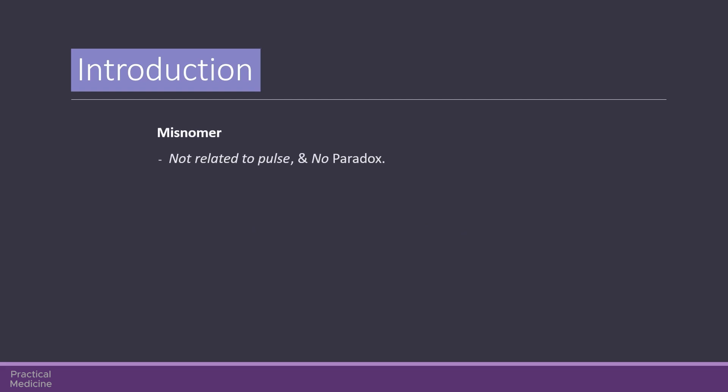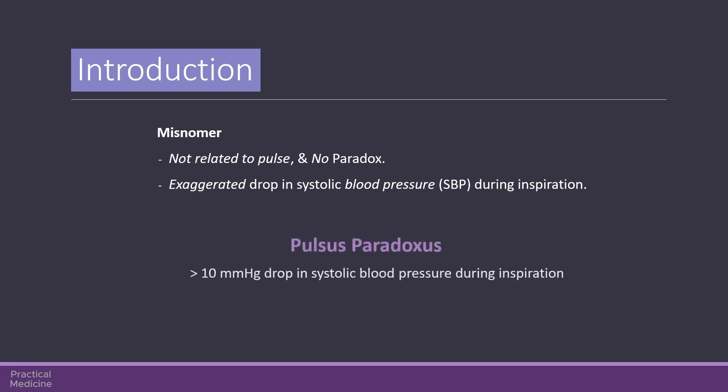Pulsus paradoxus is a misnomer, because the phenomenon is neither related to the pulse, nor is there any paradoxical change in the described sign. Pulsus paradoxus is related to blood pressure, and there is an exaggerated drop in blood pressure during inspiration. Normally, there is a small drop in systolic pressure of less than 10 mmHg during the inspiratory phase. Pulsus paradoxus is simply a greater than 10 mmHg drop in systolic blood pressure during inspiration.